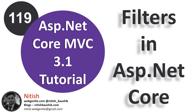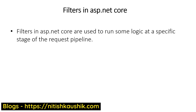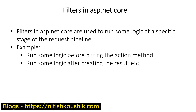In this video I'm going to talk about filters in ASP.NET Core MVC. Filters in ASP.NET Core are used to run some code at a specific stage of the request pipeline. When a request comes from the browser it travels through a couple of stages on your server: first it checks all the middlewares, then it goes to the controller action method, and then the views. If you want to execute some code at a particular place in this pipeline, you can use filters. For example, you might want to run some logic before hitting the action method, or after creating the result.